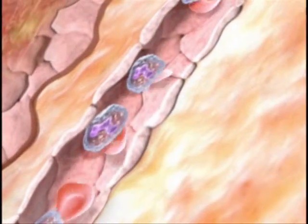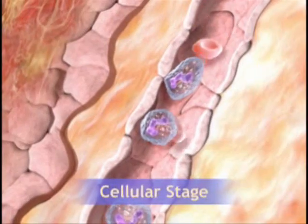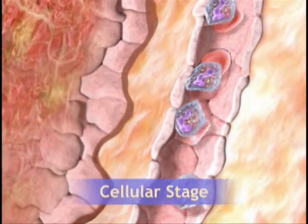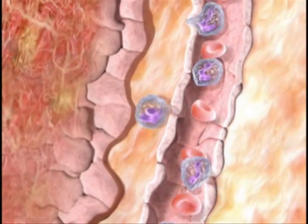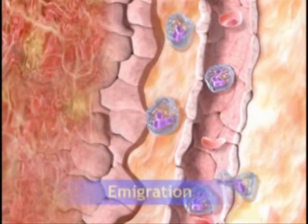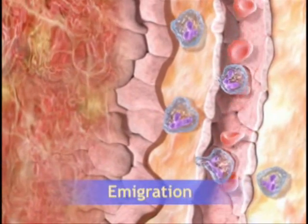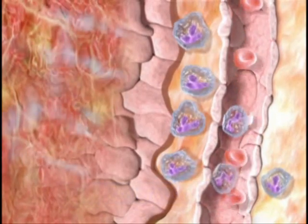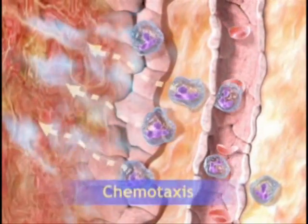The cellular stage of acute inflammation is initiated by the movement of phagocytic white blood cells, or leukocytes, into the area of injury. The leukocytes begin to adhere to the vessel wall and then, in a process called emigration, squeeze through the wall and move into the inflamed tissue. They then wander through the tissue guided by chemical signals in a process called chemotaxis.